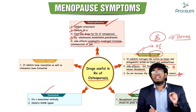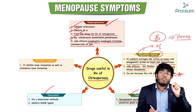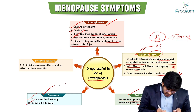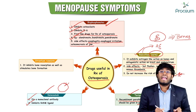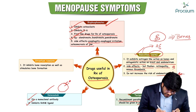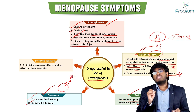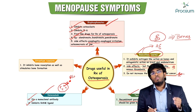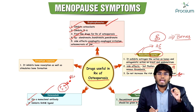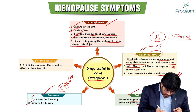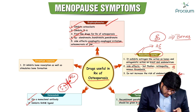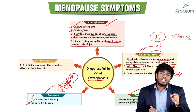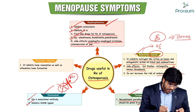Denosumab is a monoclonal antibody (MAB) that inhibits RANK ligand. Normally, RANK ligand binds the RANK receptor on osteoclasts to activate them, causing bone resorption. Denosumab blocks RANK ligand, so osteoclasts are not activated, bone resorption is prevented, and osteoporosis is treated.